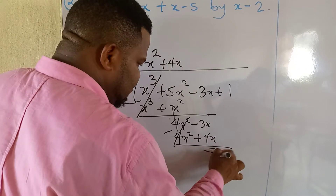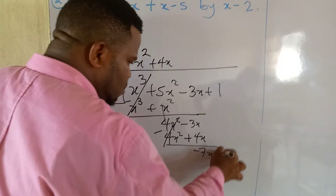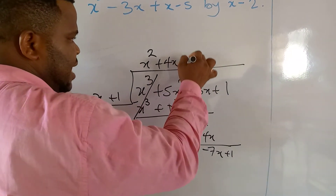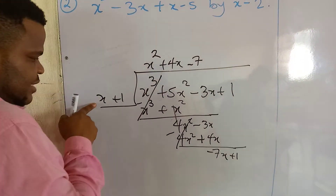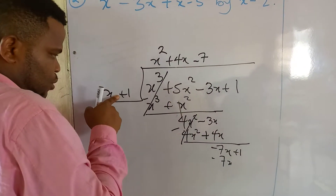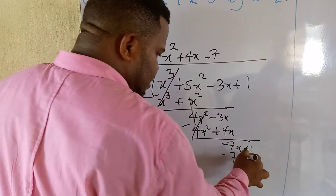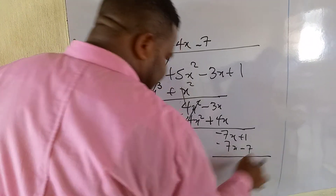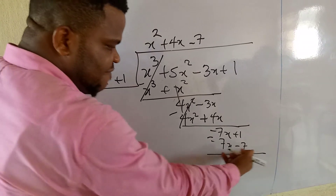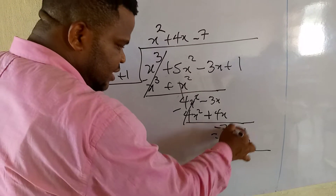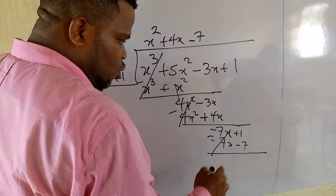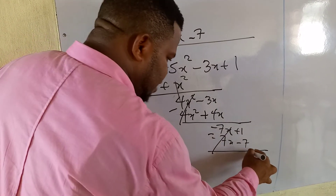After applying the minus sign, the 4x squared cancels out. Then minus 3x minus 4x gives minus 7x. We bring down the next number, which is plus 1. x goes into minus 7x giving minus 7. Then minus 7 times x is minus 7x, and minus 7 times 1 is minus 7. We draw a line and introduce minus again.